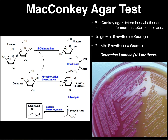Now let's get into a detailed discussion about how we actually interpret the results. The first thing we need to determine is whether or not there's growth — this is probably the easiest thing. If you have no growth, meaning the plate is growth negative, that means your organism is gram-positive. You would not see any colonies growing on the plate, and if there's no growth, your organism is gram-positive. In the case where your organism is gram-positive, you have no growth in the first place, so you would not be able to tell what the lactose reaction is — whether it's lactose positive or negative.